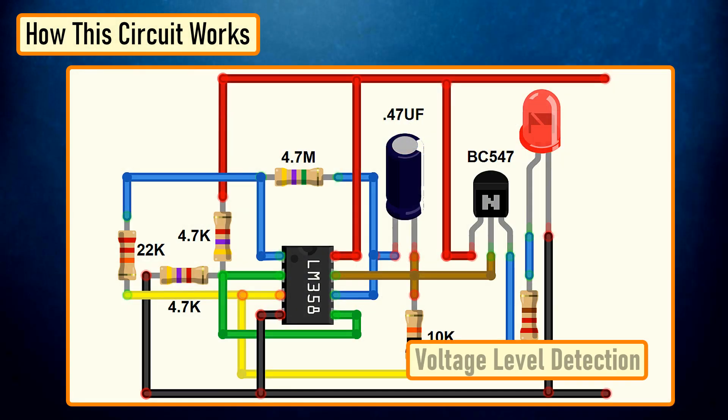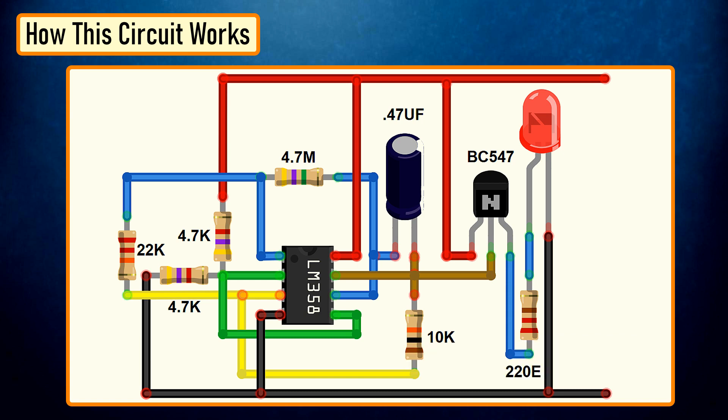So basically the op-amp here is used for voltage level detection. In our circuit we are applying a voltage on the positive pin, pin number 3, and the voltage to be detected is applied on the negative pin, pin number 2. The transistor acts as a signal amplifier. You will need this if you are attaching a cluster of LEDs. However, just for one LED you can simply remove it.